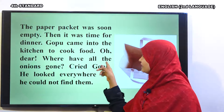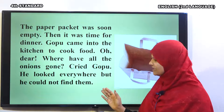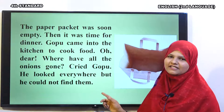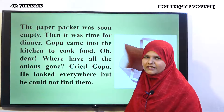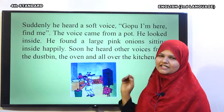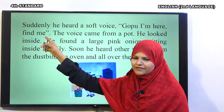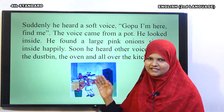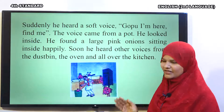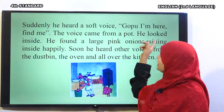Oh dear! Where have all the onions gone? Cried Gopu. Woh dekh kar Gopu ko hairat hoti, taajjub ho kar onions dhundhne mein lag jaata. He looked everywhere, but he could not find them. So suddenly, he heard a soft voice. Achanak se soft awaaz sunai deti usko. Gopu, I am here, find me. Jaise ke aap log chhupa-chhupai khailte hain, isse tarah onions Gopu ke saath chhupa-chhupai khail rahi thi. The voice came from a pot, ek pot se awaaz aati.